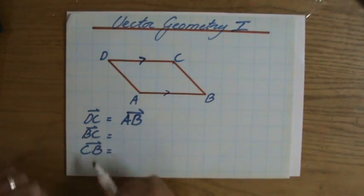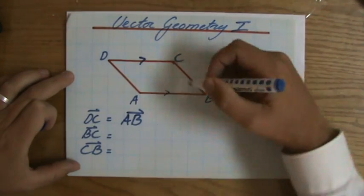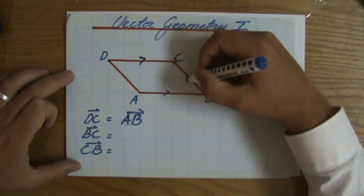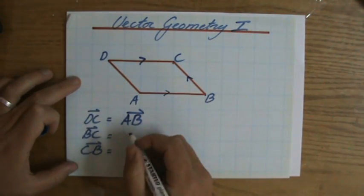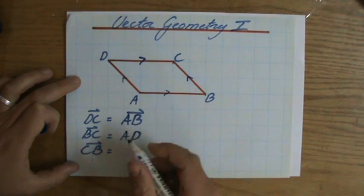Another question: BC. Give me another vector exactly the same as BC. So it's from B to C, and I'm sure you will already have said out loud that is going to be AD. You see, this is